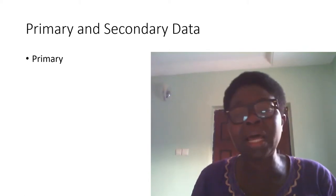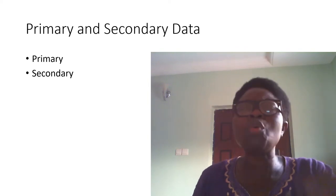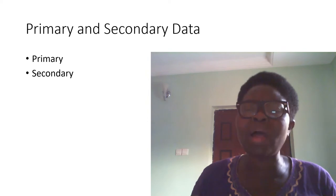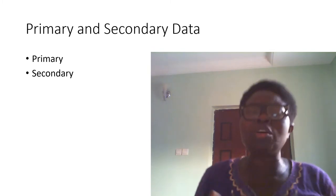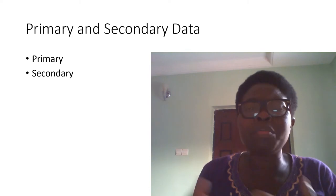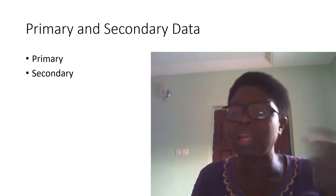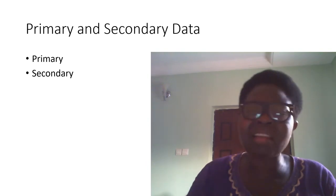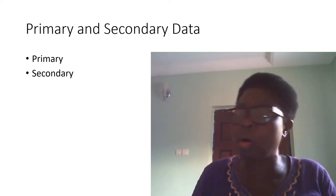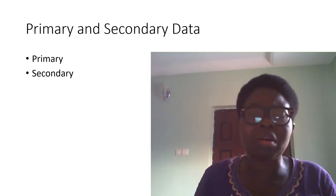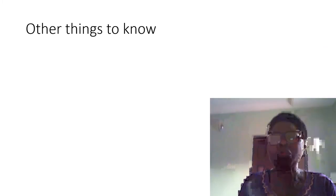Now, regarding primary and secondary data: primary data are data collected directly from the source. For example, if you want data on the ages of school-going children, you go and meet the students directly and ask their ages — that is primary data. But if you walk into a school, meet the principal, and use the admission register to collect the names and ages, that is secondary data.